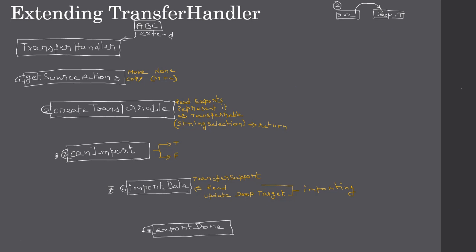The framework then calls exportDone. You can consider this as signaling that the whole drag-and-drop operation is completed. 'Export done' means the objects were exported and successfully imported by the drop target. Here we can do final cleanup, or if we have any pending tasks on the source, we can handle those after the export is done.